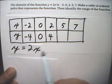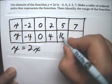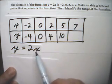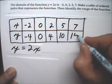When x is 5, we'd have 2 times 5, and that's 10. And when x is 7, we'd have 2 times 7, and that's 14.